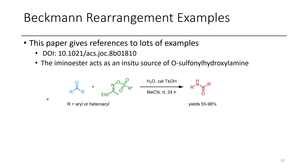Another example is this paper where they take this amino ester-derived oxime sulfonate. In the presence of strong acid, they liberate the free sulfonyl hydroxylamine, which can then form a ketoxime, and this can then undergo the same sort of Beckmann rearrangement. The cool thing here is that this reagent avoids the use of hydroxylamine derivatives on their own, and they get really good yields. The substrates are somewhat limited, but this is just a JOC paper, so that's probably fair enough.